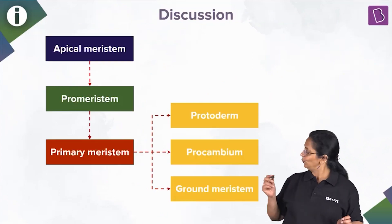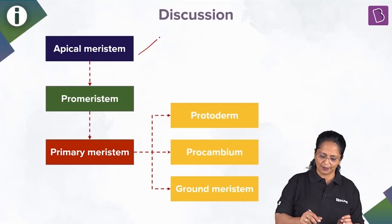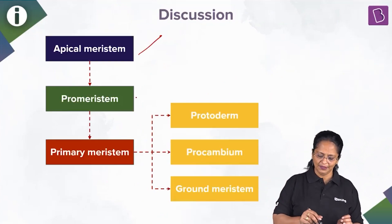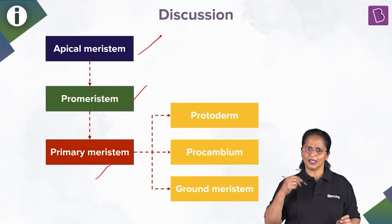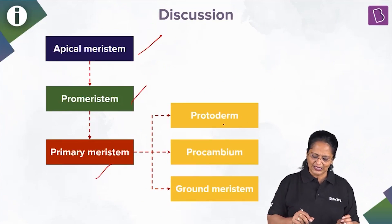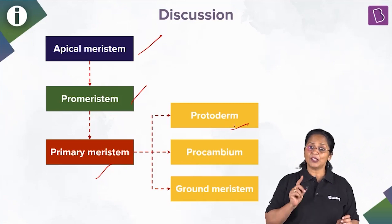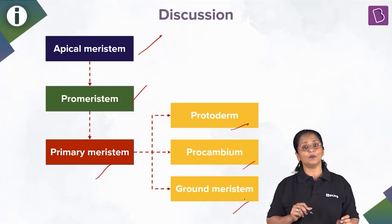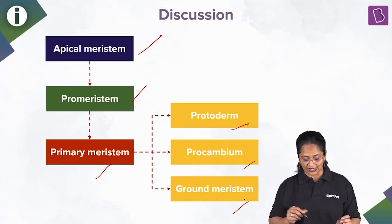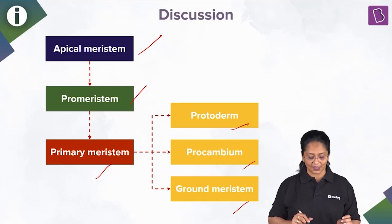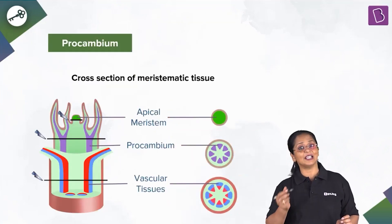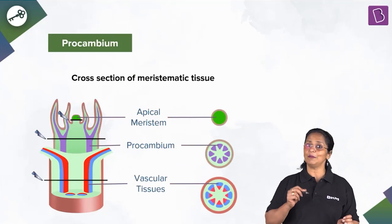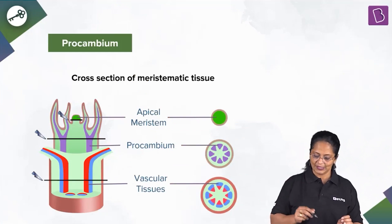Here is a simple flowchart. The apical meristem gives rise to the pro-meristem, and later the primary meristem is formed. The primary meristem based on function has a protoderm, procambium, and the ground meristem. Protoderm gives rise to the epidermal layers. Procambium gives rise to xylem and phloem. Ground meristem gives rise to the cortex.